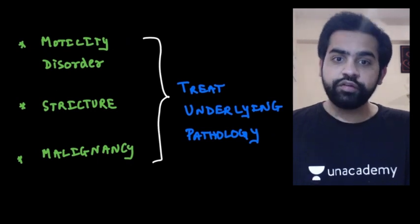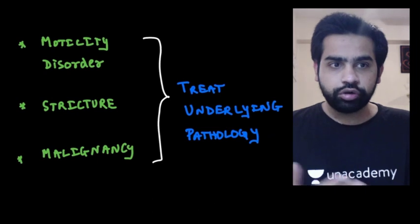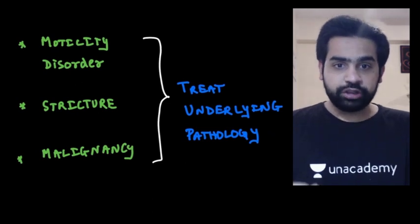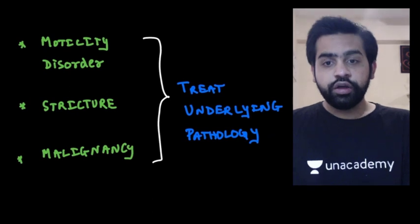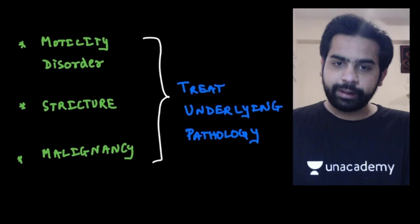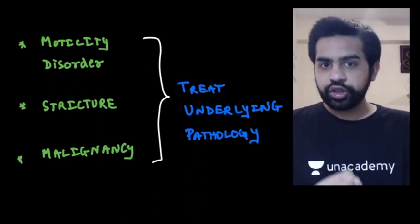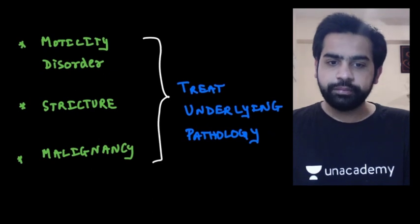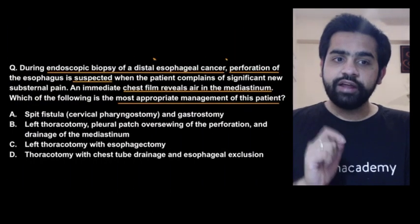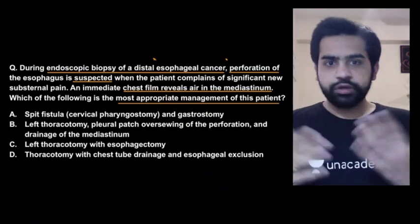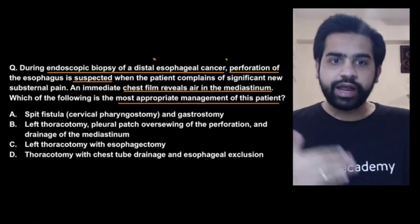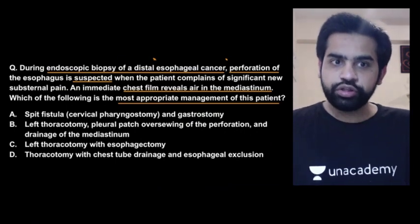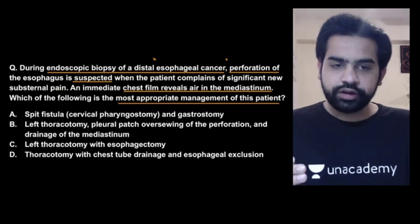If there is an underlying pathology — a motility disorder, stricture, or malignancy as in this case — you must treat it. Even if the patient comes within 12 hours, whenever you perform a thoracotomy you treat the underlying pathology. This patient had esophageal carcinoma, so you must go for esophagectomy. That is why the answer is left thoracotomy with esophagectomy rather than option B.